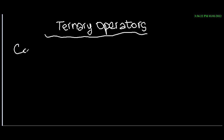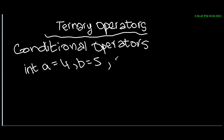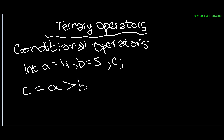Let me get into ternary operators. They're very simple — they're also called conditional operators because they check for a certain condition between two operands. So let's say I have int a equals 4, b equals 5, and c doesn't equal anything as of now. I want to check whether a is greater than b, and if so, c will equal a. So I can write: c equals a greater than b question mark a colon b.